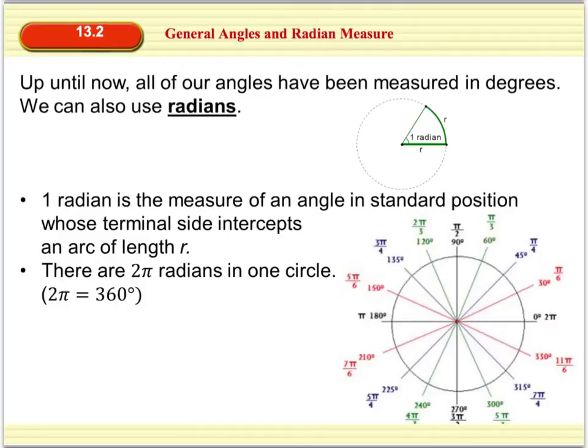Up until today, all the angles that we have been using were measured in degrees. Now that's going to change. Today we're going to actually look at radians. A radian is defined as the measure of an angle in standard position, so it does start out at the origin, whose terminal side intercepts an arc of length r. Here's our initial side. We have a terminal side here that's going to intersect our circle, and we have this arc length here that is r. There are 2π radians in one circle. That's because one π is equal to 180 degrees, so 2π then has to equal 360 degrees.